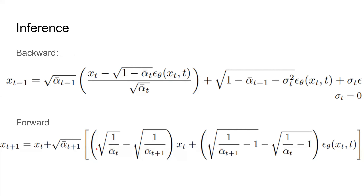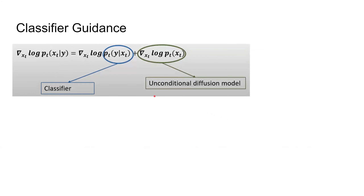Now we have the forward procedure, which is basically using the trained model to inference data. I also want to talk about the classifier guidance. This is another way to write the diffusion model — this is the classifier term, and this is the unconditional diffusion model. The unconditional diffusion model just means we train the diffusion model without any additional information to guide it.